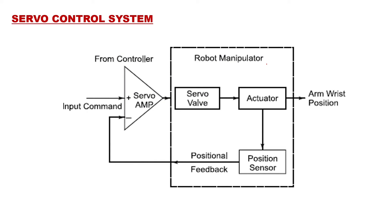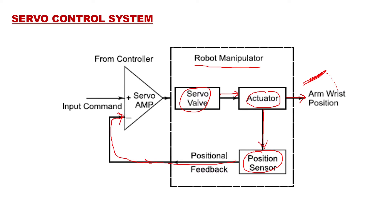Now for the servo control system: a similar robot manipulator is shown here with a servo valve — similar to the solenoid valve — which sends a signal to the actuator. The actuator moves the arm. Once the arm reaches a position, a position sensor gives a signal to the feedback amplifier, which is a comparator.